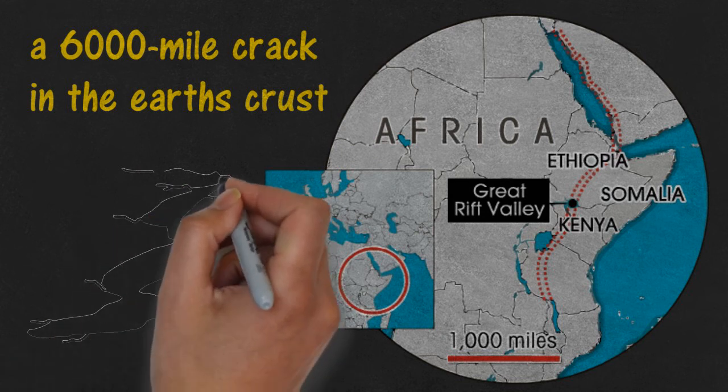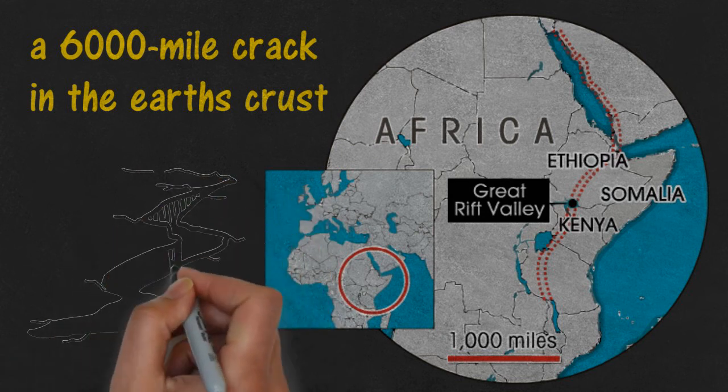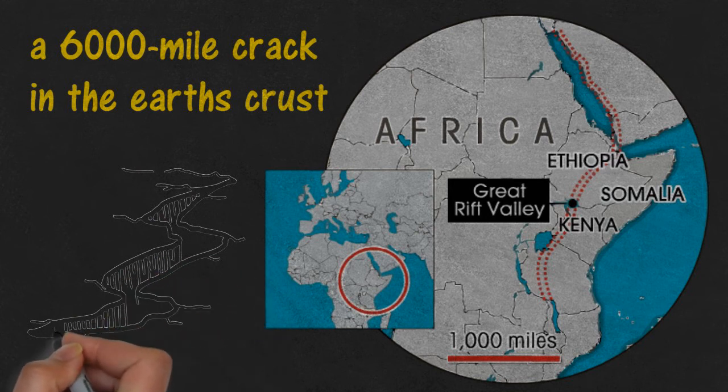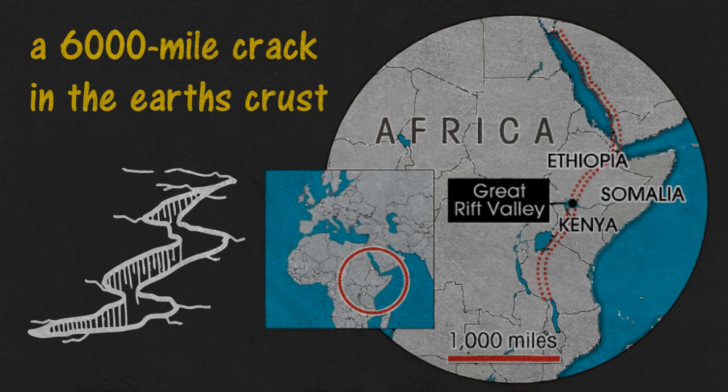Scientists say that if the plates there continue to move apart, then millions of years from now, eastern Africa will split from the continent to form a whole new landmass. In between the old and new landmasses will be a mid-oceanic ridge. And again, that's an underwater mountain system. That's pretty remarkable.